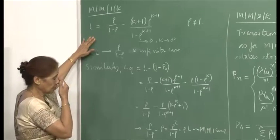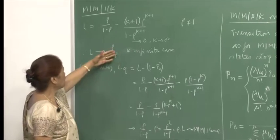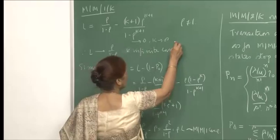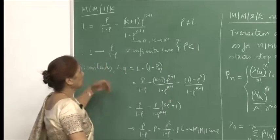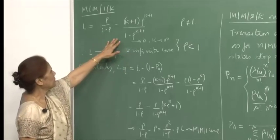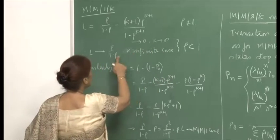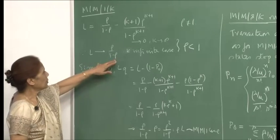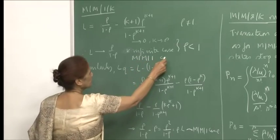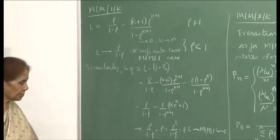As I showed in the last lecture, the derivation was straightforward. I also showed that as k goes to infinity, and for rho less than 1 — the formulae are valid when rho is not equal to 1, because otherwise you cannot divide by zero — L will go to rho upon 1 minus rho, which is the MM1 case. This is as expected, because when you allow k to become large, it reduces to the MM1 case.